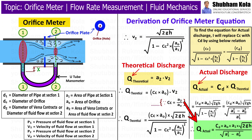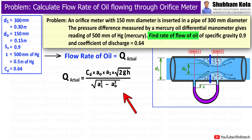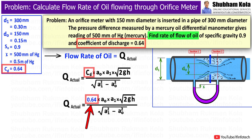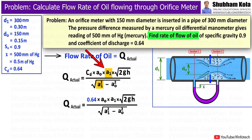By using that formula, we will calculate the actual discharge. In this formula, the value of coefficient of discharge, i.e. CD, has already been given in the problem as equal to 0.64. Here, A1 is the area of the pipe at section 1 and A0 is the area of the orifice, which we will need to calculate.